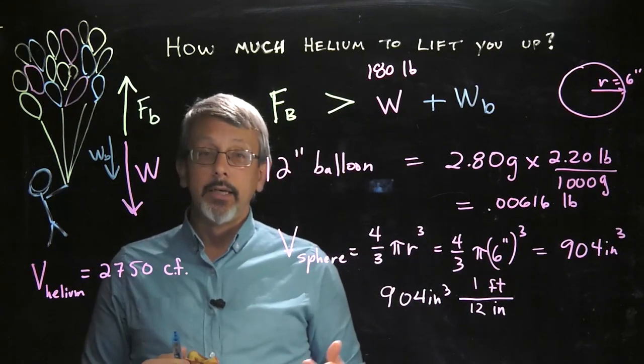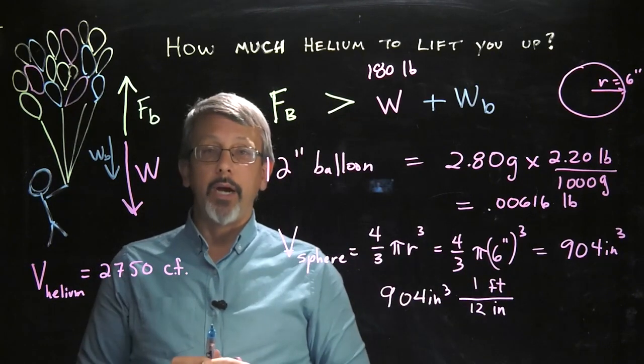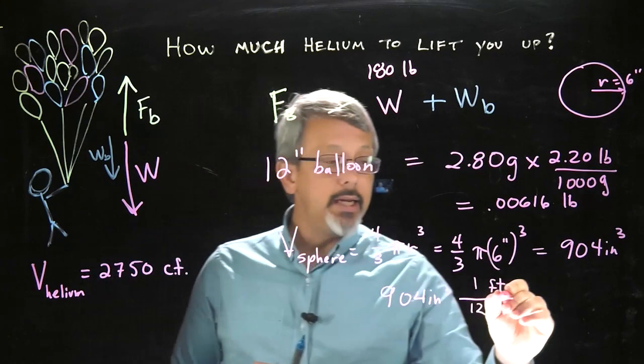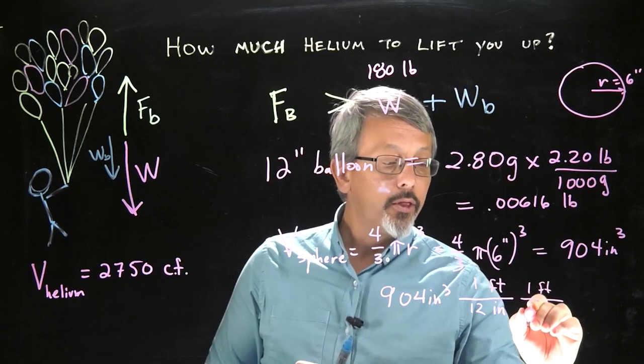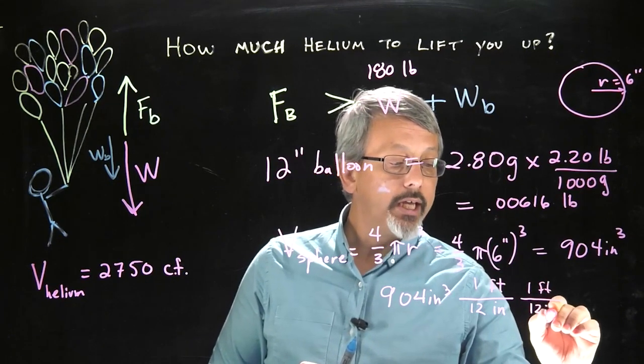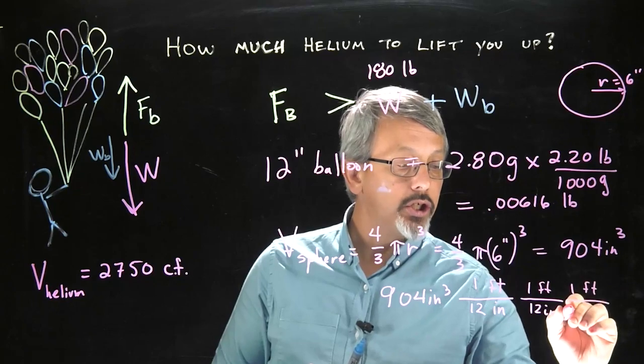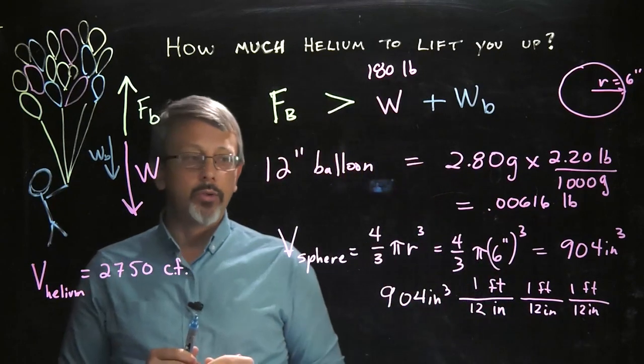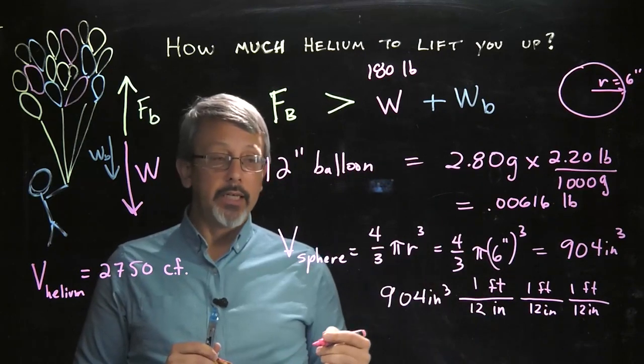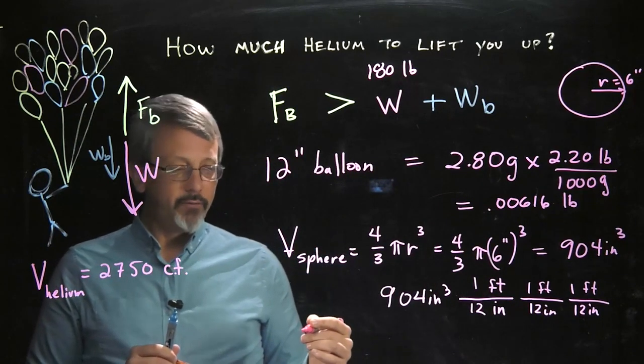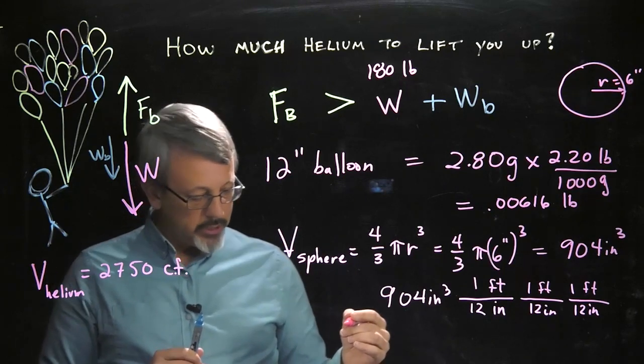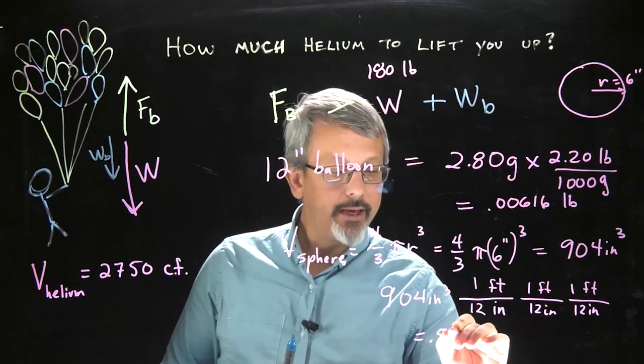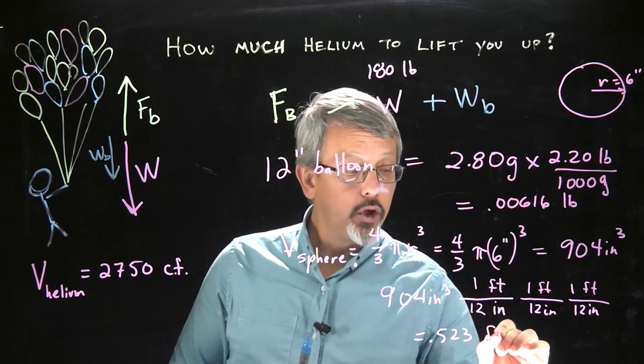A very common mistake is to do that conversion and simply divide by 12. But notice that doesn't work because we're talking about cubic inches. So I need to make sure I do that conversion three times for each of the dimensions in my three-dimensional volume. So I need to divide by 12 three times effectively to find the volume in cubic feet. And the number I get when I do that is 0.523 cubic feet.